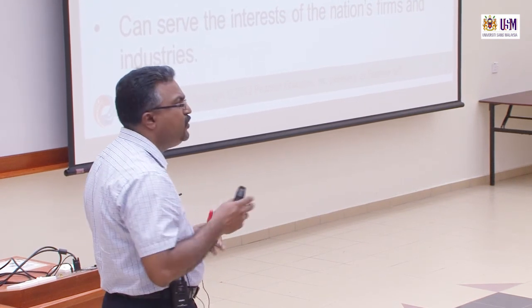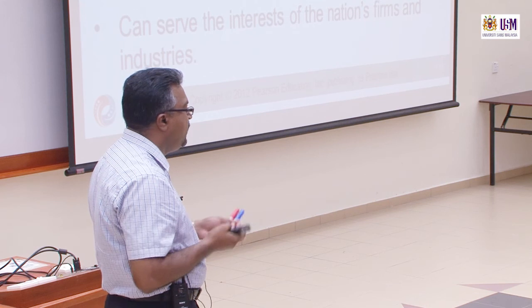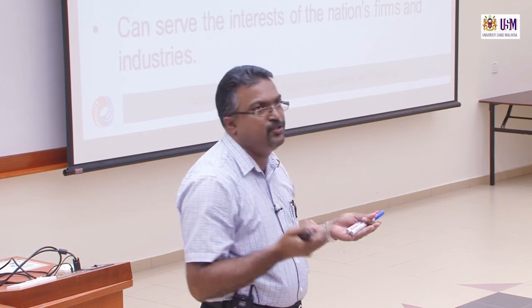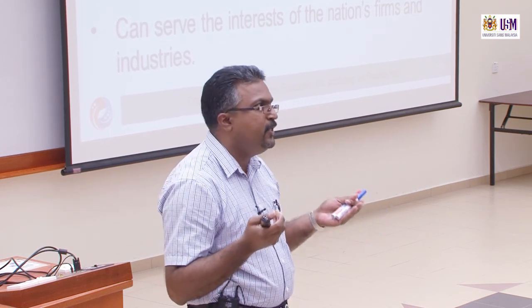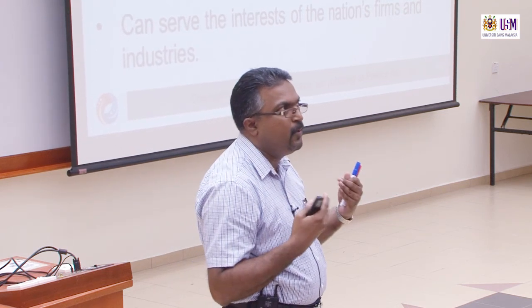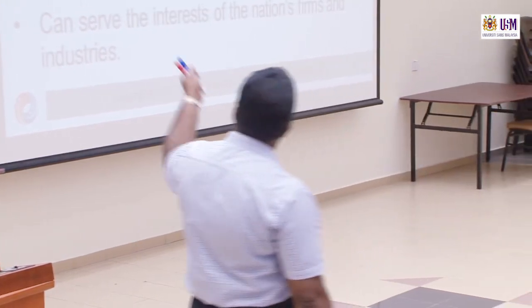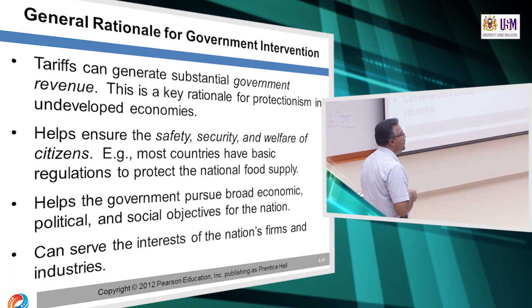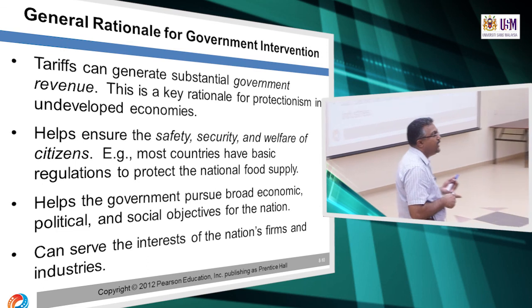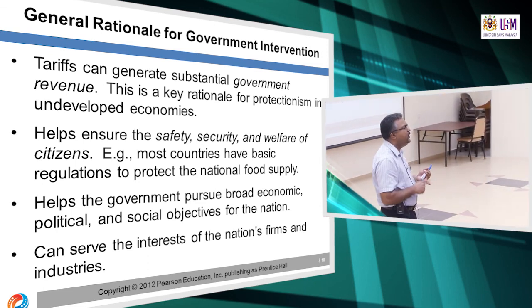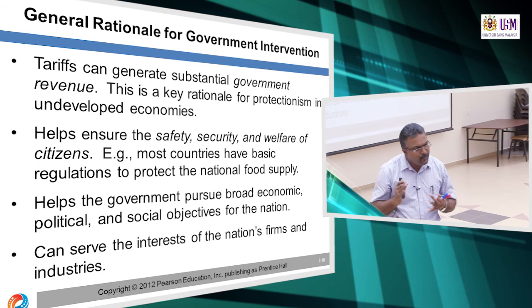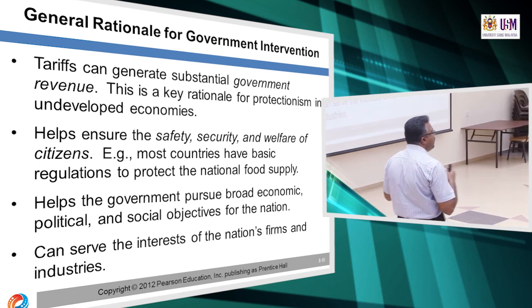General rationale for government intervention: why as a government would you want to impose tariff and intervene in private enterprises? Number one, tariff can generate revenue for the government. For example, the government of Kenya — 25% of its revenue comes from tariff. Malaysia, I think 15 to 20% comes from tariff. Singapore, above 50% of revenue comes from tariff because they import and export a lot as an entrepôt.